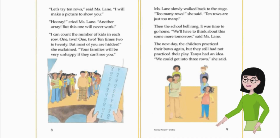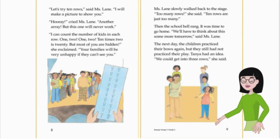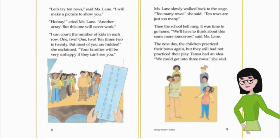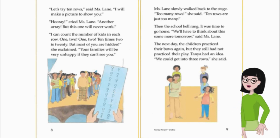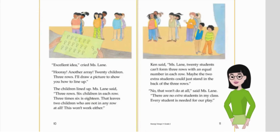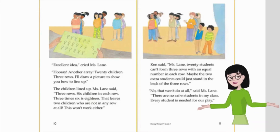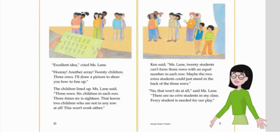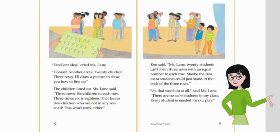Then the school bell rang. It was time to go home. 'We'll have to think about this some more tomorrow,' said Ms. Lane. The next day, the children practiced their bows again, but they still had not practiced their play. Tanya had an idea. 'We could get into three rows,' she said. 'Excellent idea!' cried Ms. Lane. 'Hooray, another array. 20 children, three rows.' She drew a picture. Three rows, six children in each row. Three times six is 18. That leaves two children who are not in any row at all. 'This won't work either.'